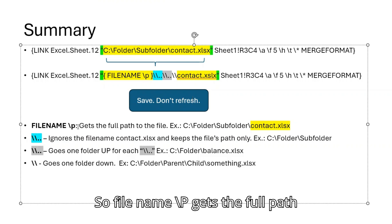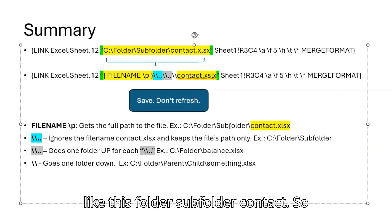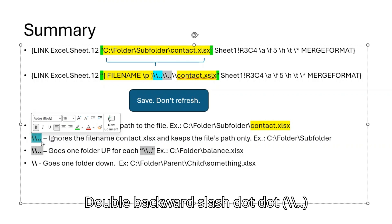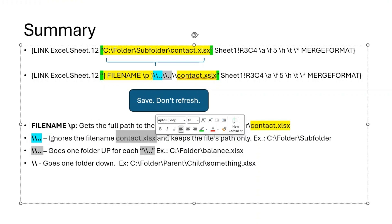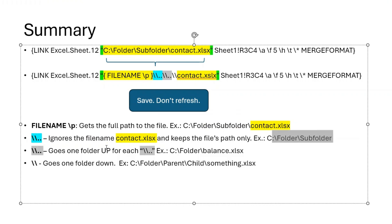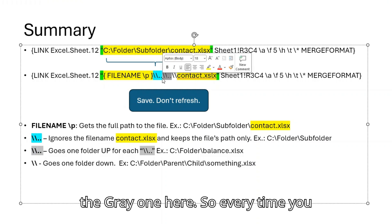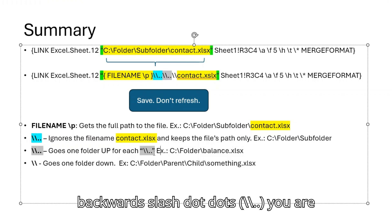Here's the explanation for what those things do. FILENAME with backward slash P gets the full path to the file — for example: folder, subfolder, contact. So backward slash double backward slash dot dot ignores the file name and keeps the file's path only. And as an example, if you want to go one folder up, every time you use one of those double backward slash dot dots you are going to go one folder up.